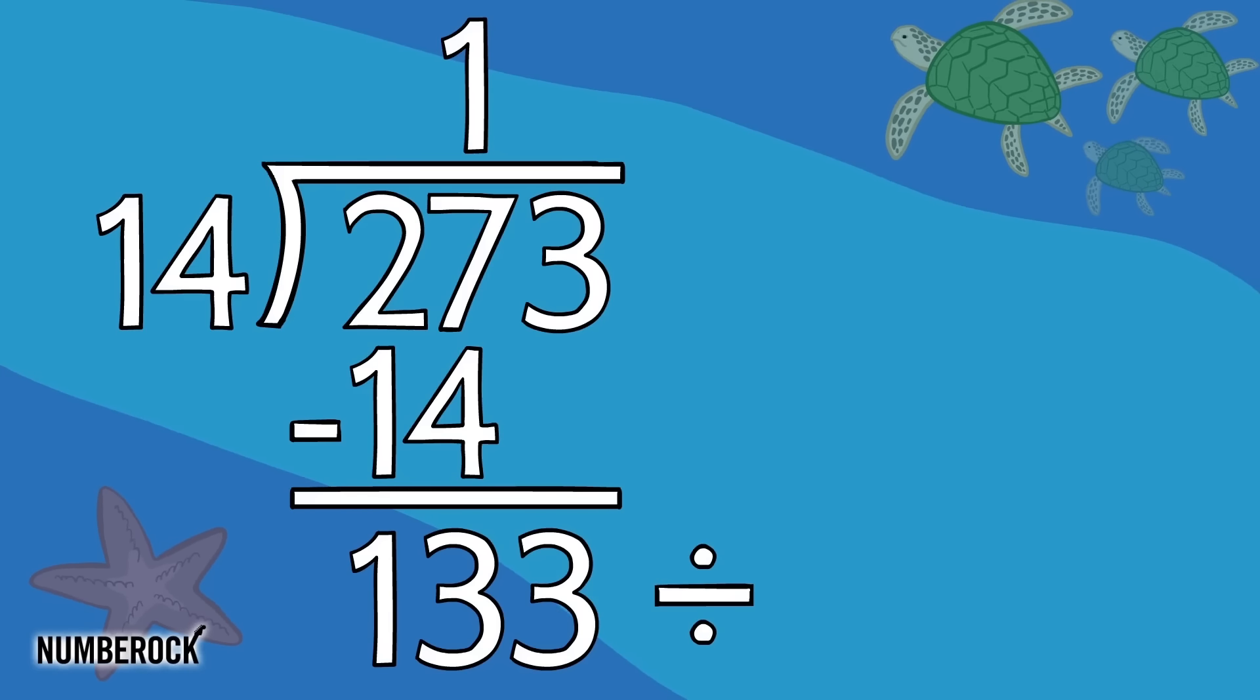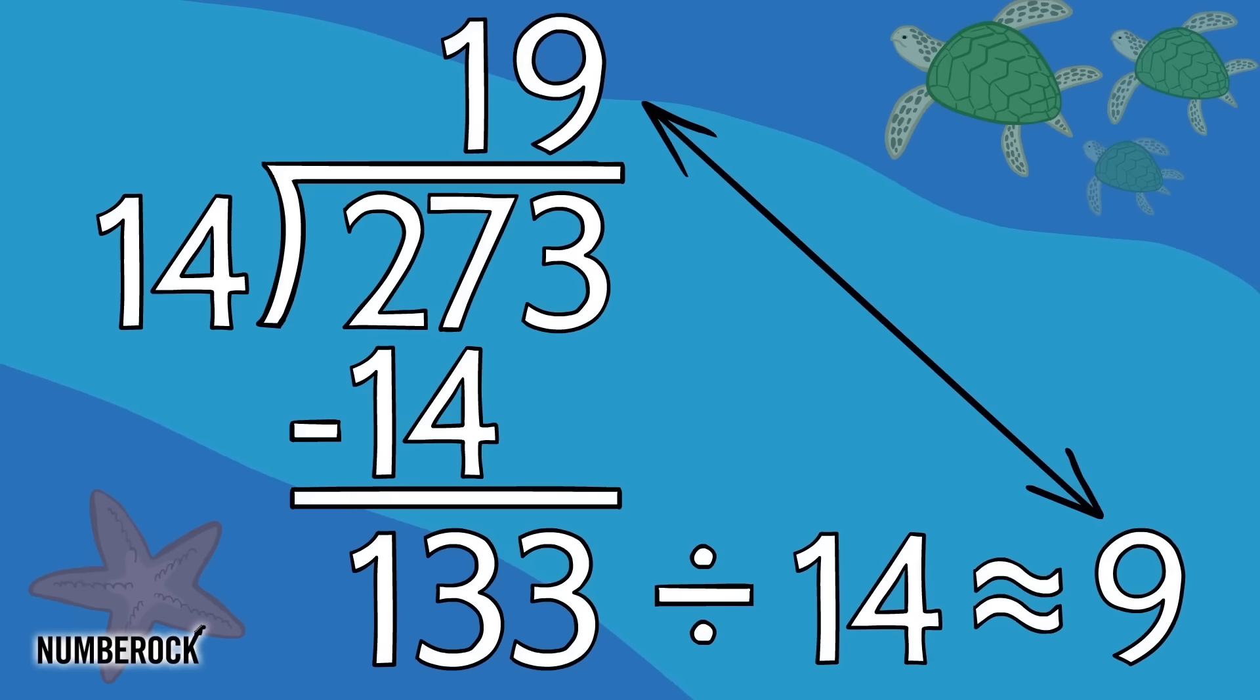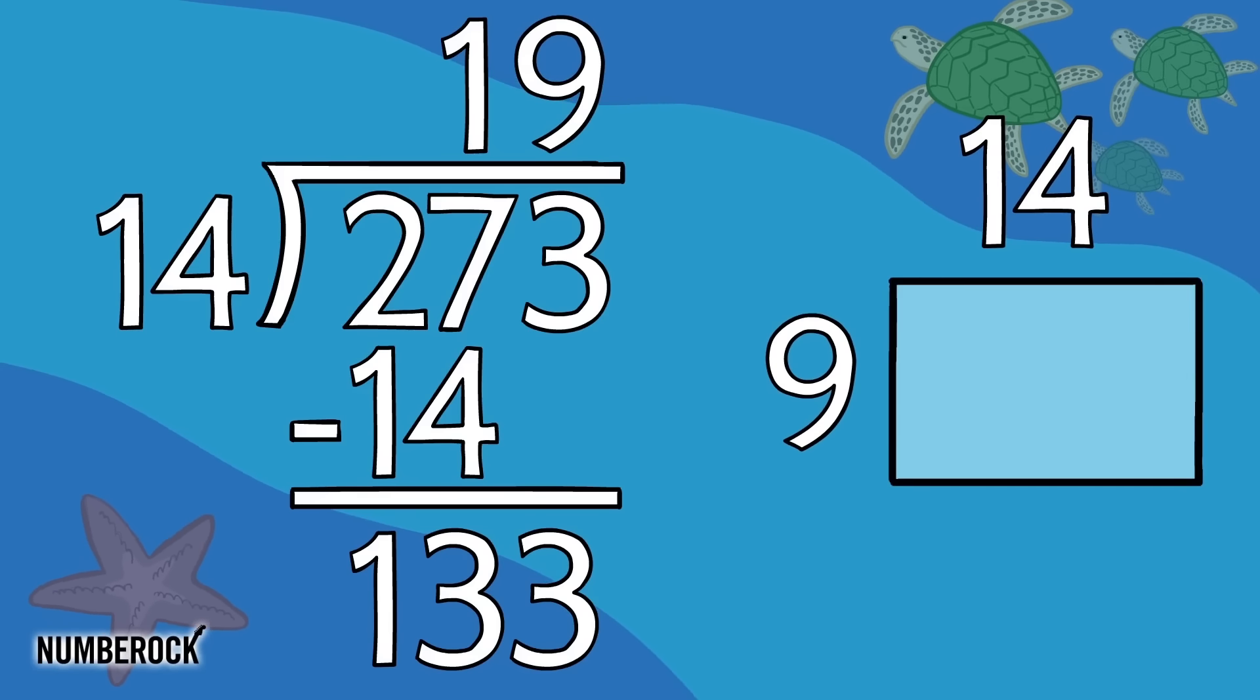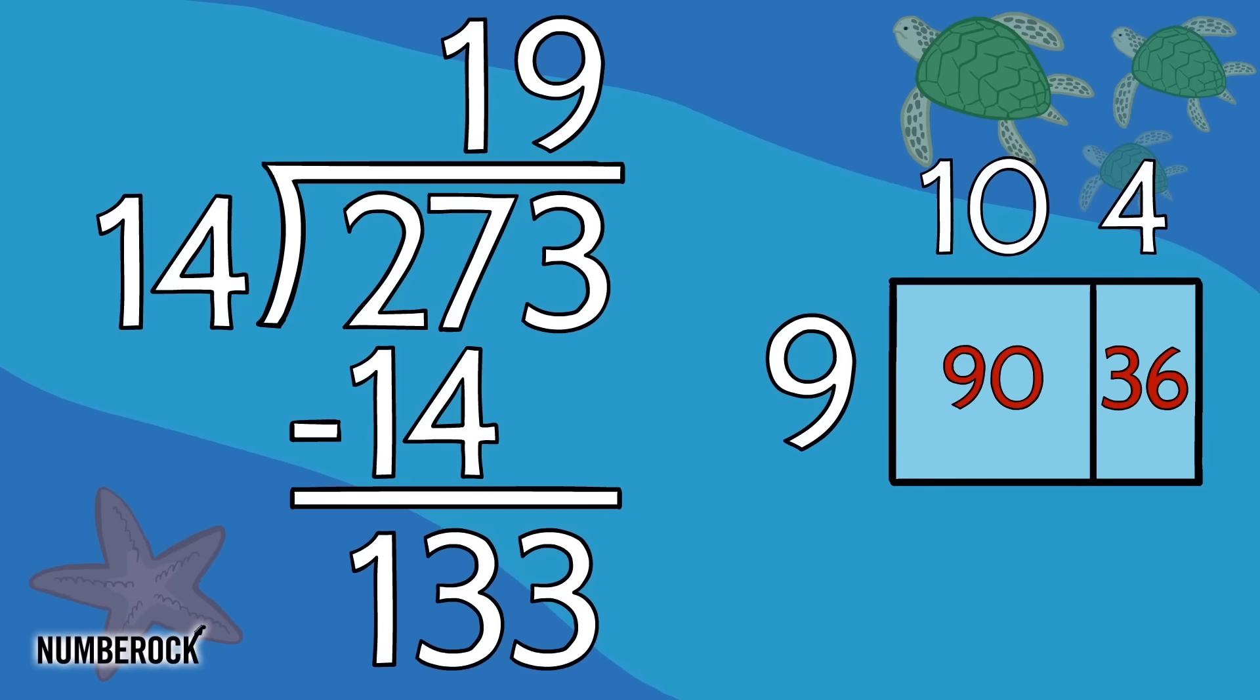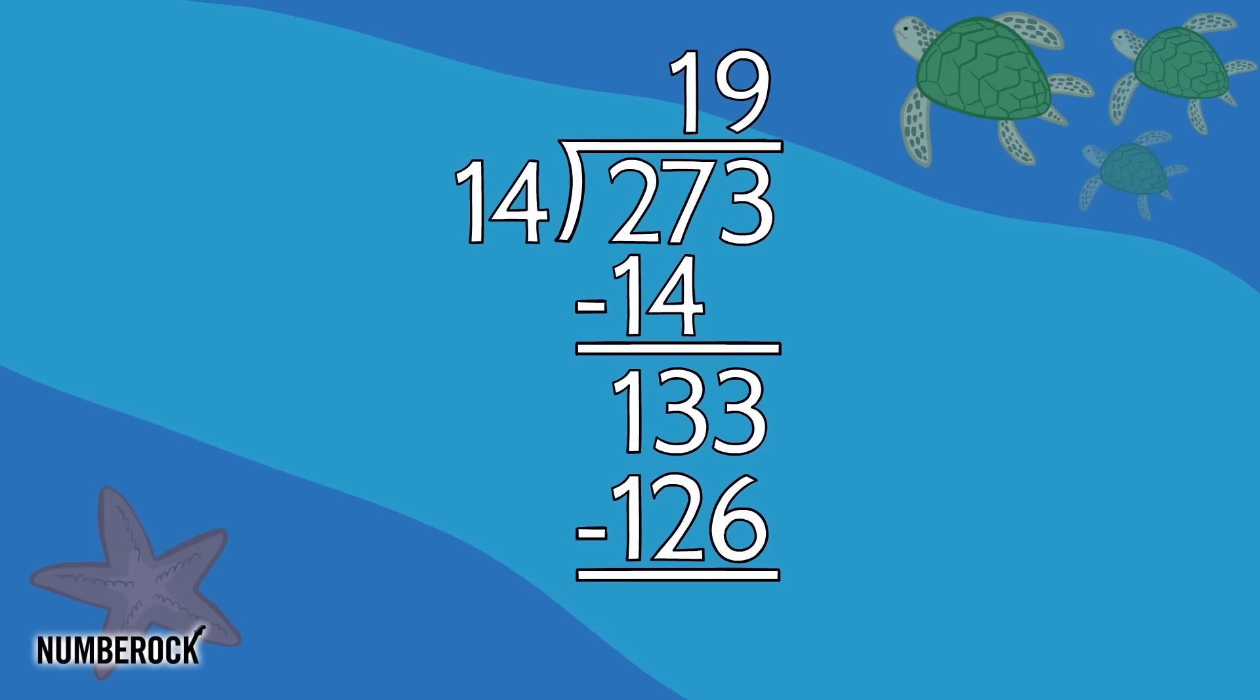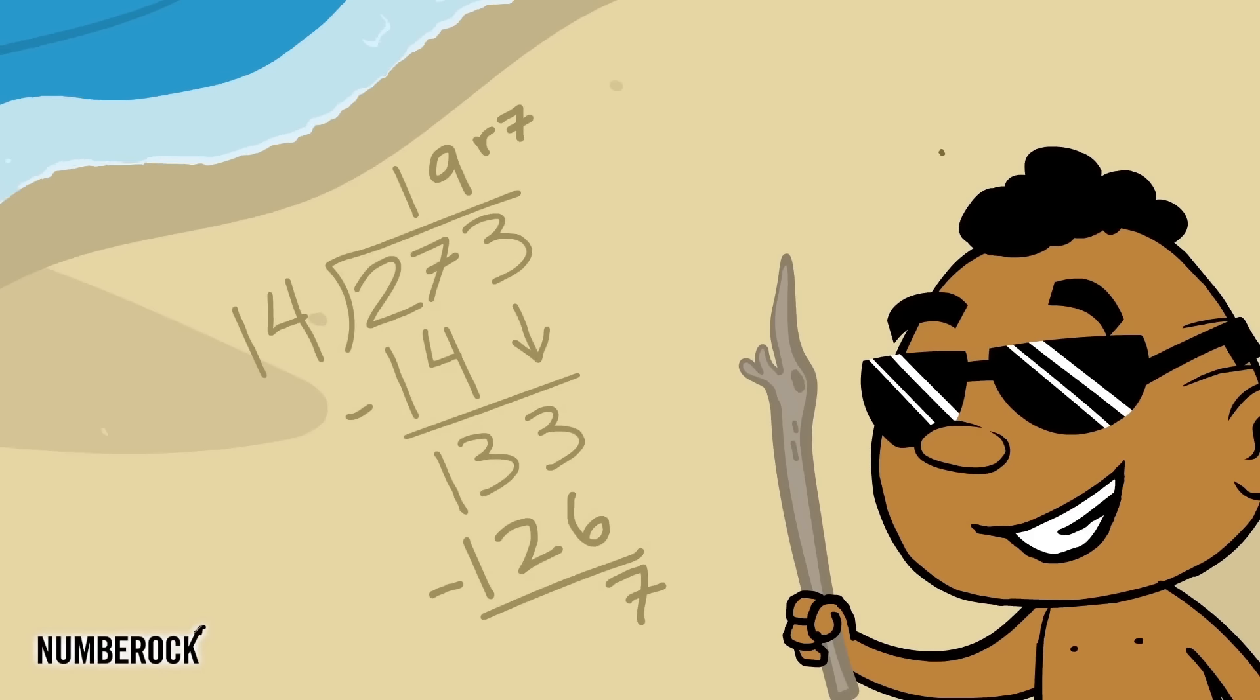Divide 133 by 14. First estimate in your mind. I think we should try 9. Multiply 9 by 14. With this mental math trick, the product you will find is 126. Subtract and the remainder is 7, so write a 7 in the quotient with an R present.